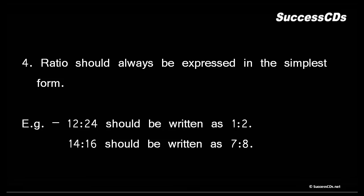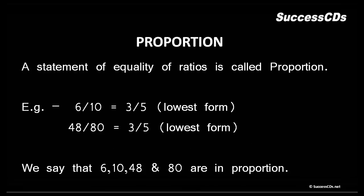Next we move on to proportion. The statement of equality of ratios is called proportion. Let's have a look: 6/10 we can write it like 3/5 in the lowest possible form. Same way, 48/80 we can write it like 3/5 in the lowest possible form. Both the numbers are divisible by 8 and then by 2.